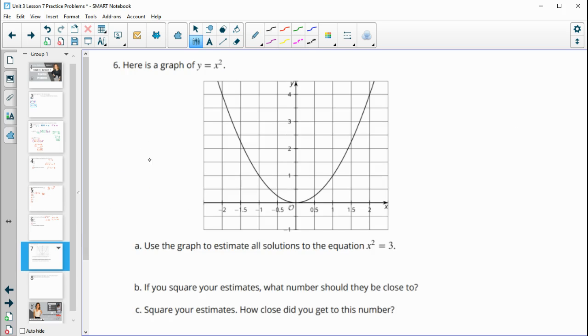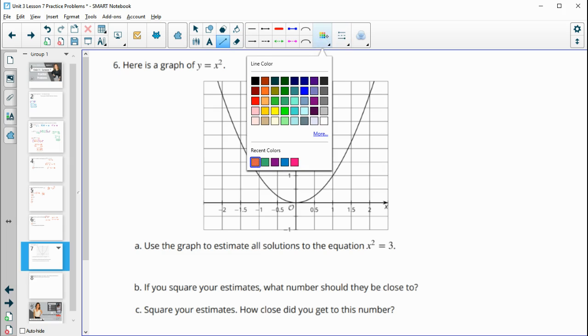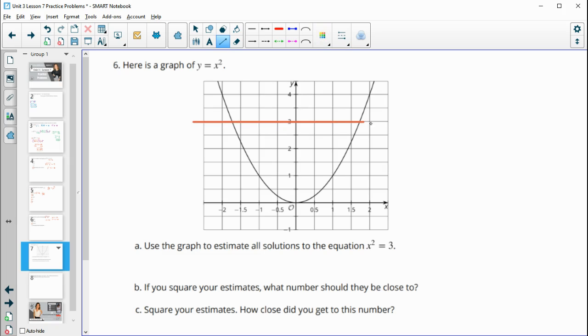Number 6, here's the graph of y equals x squared. Use the graph to estimate all solutions to the equation x squared equals 3. So then we're looking at a y value of 3. So let's just look here. And so then you're estimating what this x value is. So we're just going down here to try to determine what this x value might be. So looks like maybe halfway between one and a half and two. So if I estimated, I would say maybe like 1.75 and negative 1.75 as my estimations.